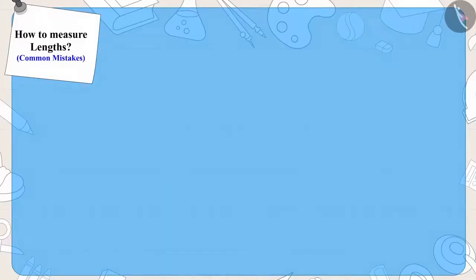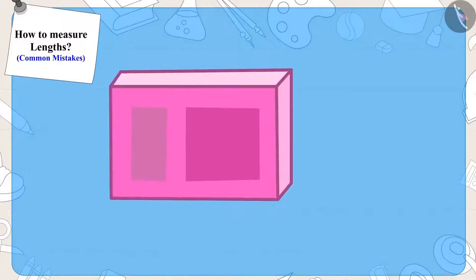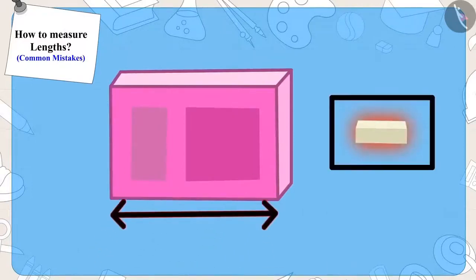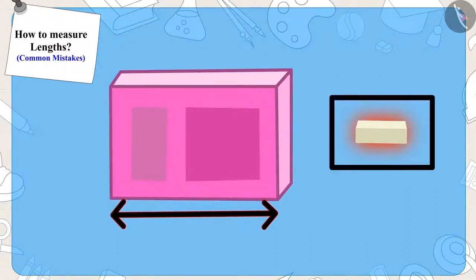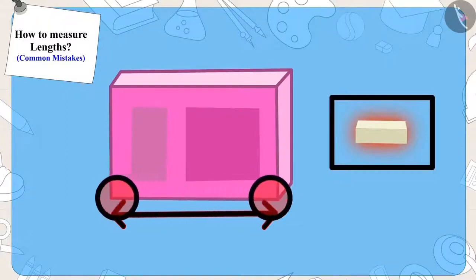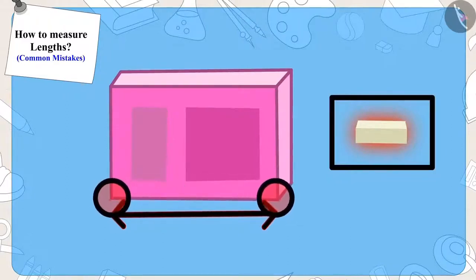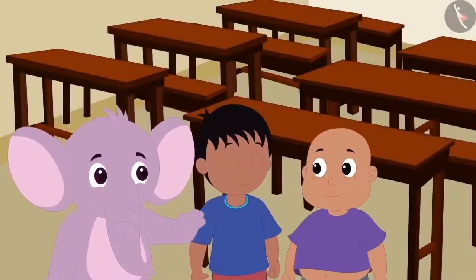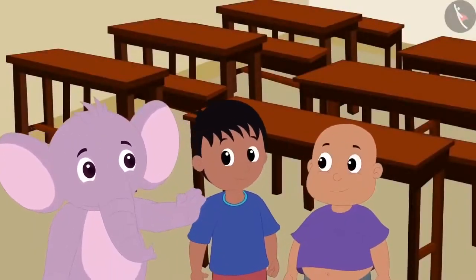Children, remember — whenever we measure the length of an object with the help of another object, we should measure the length from one end of the object to the other end. Appu made Raju and Bablu understand this.